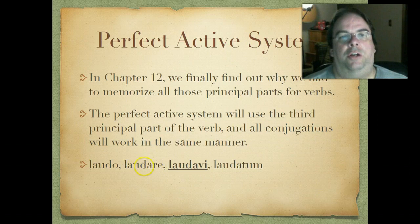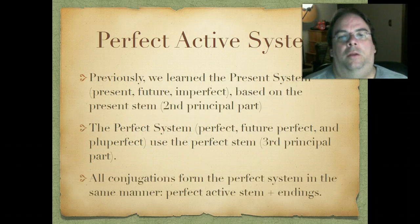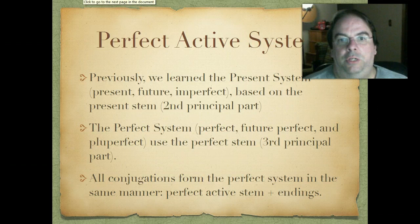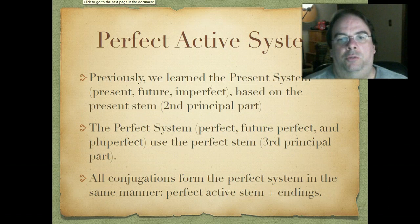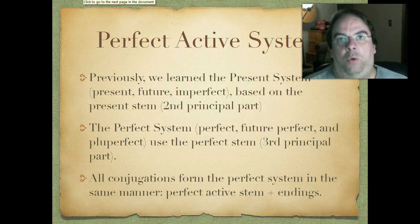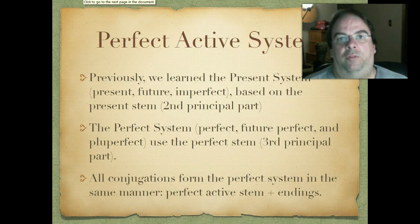The perfect system — these three new tenses: the perfect, future perfect, and pluperfect — use that third principal part, and we're going to get the perfect stem out of that. All conjugations form the perfect system the same way, so like I said, good news there. It's just the perfect active stem plus some new endings we're going to have to memorize. The good news is some of them look really familiar.